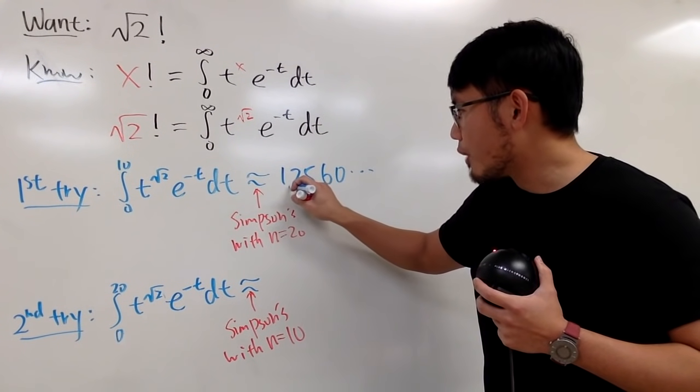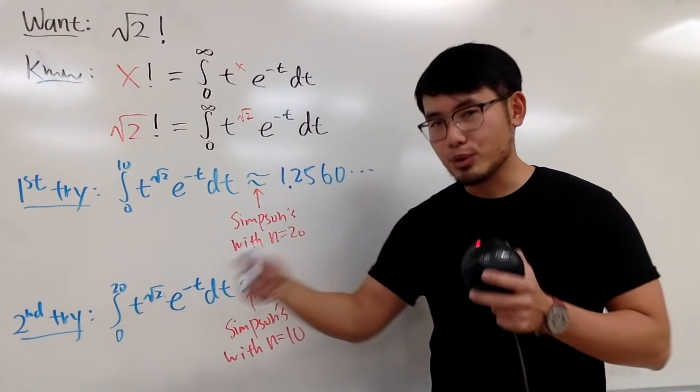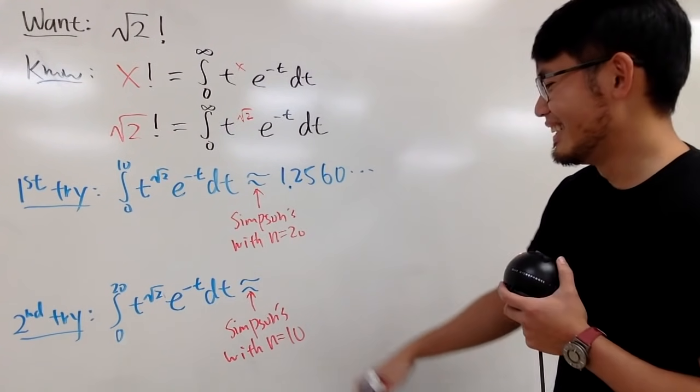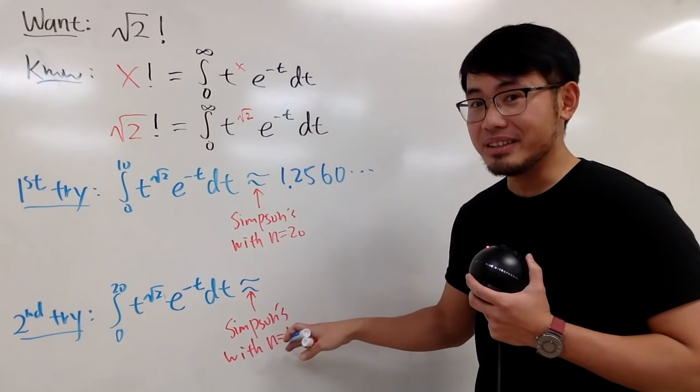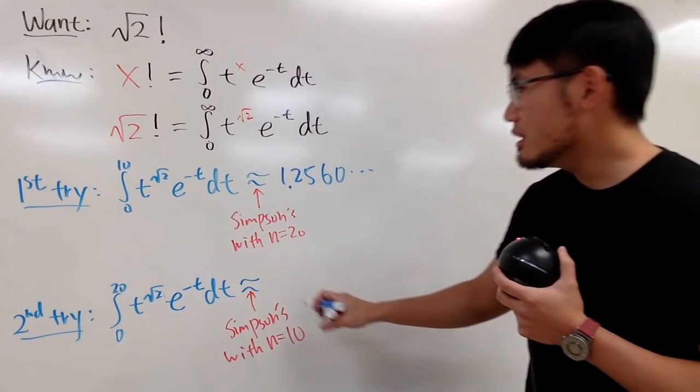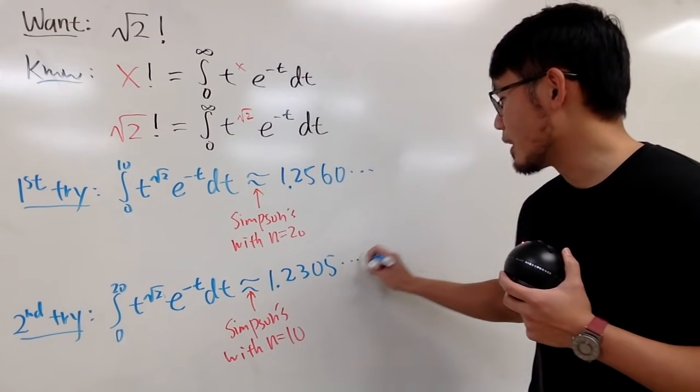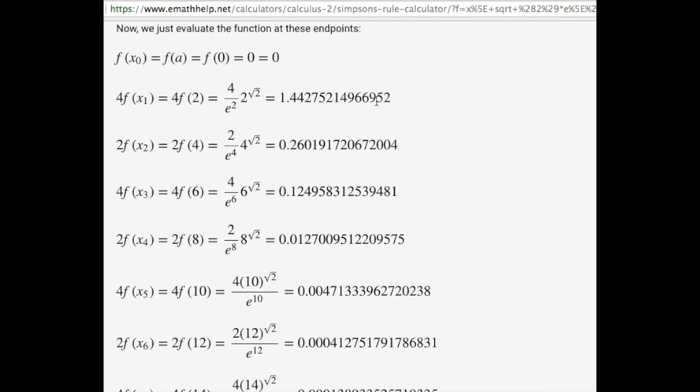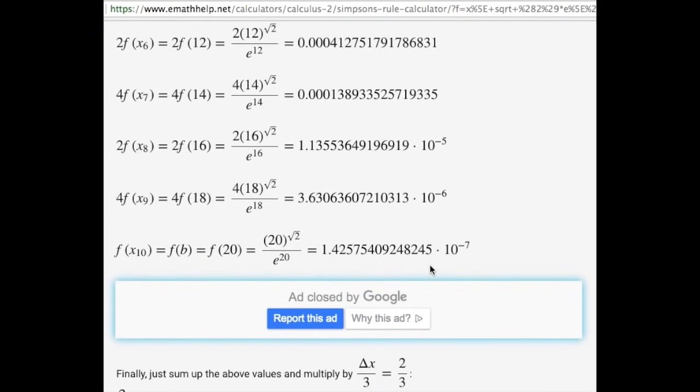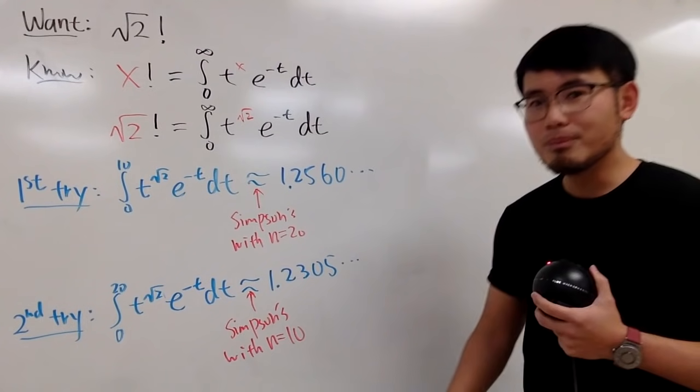And if you go from 0 to 20, which is a longer interval, and if you just use n equals 10, the answer is approximately 1.2305, and so on.